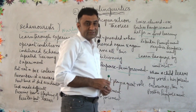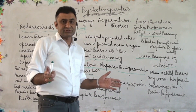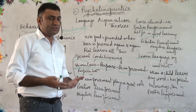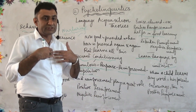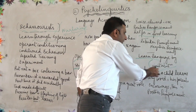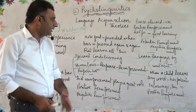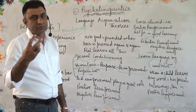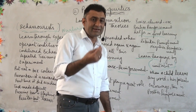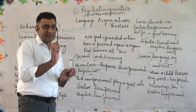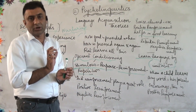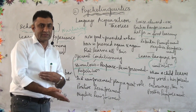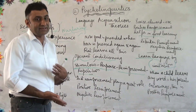Babies also learn their first language through imitation, because they are in a society where parents, mother, father, uncles, brothers, sisters, and grandparents are using language and uttering different words. When a child listens to those words and tries to repeat them, this is called imitation. For example, when a child learns the word 'biscuit,' whenever that object appears before the baby, he associates it with the word through repetition. Parents feel happy, encourage, reward, and praise him, and he starts learning.